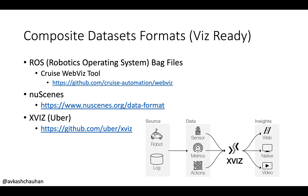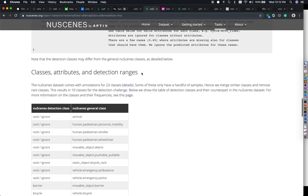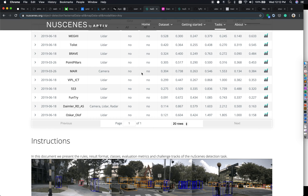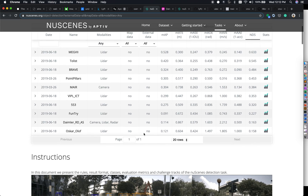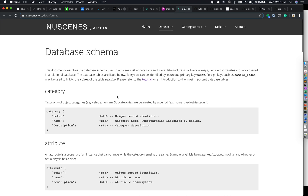Once you have all that data available, there are a couple of ways to create composite data. There are ROS bag files used by the Cruise WebViz tool, and there is the nuScenes dataset format which you can also look into. If you look into the nuScenes dataset, you can see information about it and its database schema.